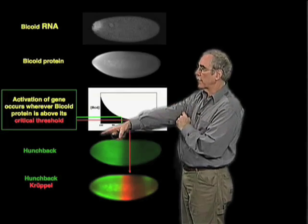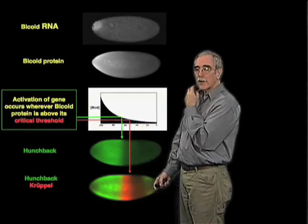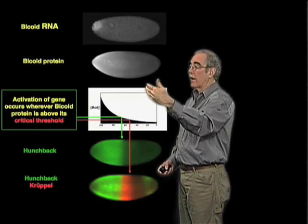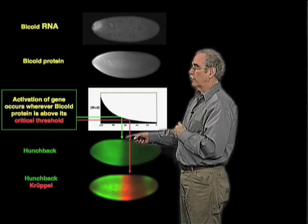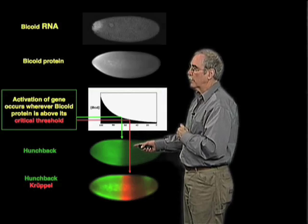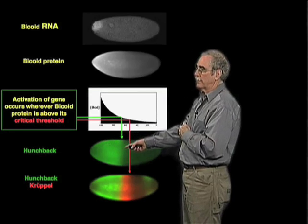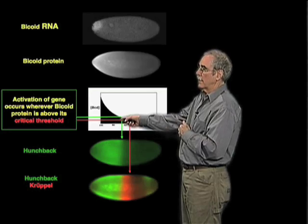So there are certain genes, for example, like the hunchback gene, that are activated by relatively higher concentrations of Bicoid protein and show expression only in the anteriormost 48% of the egg, as you can see here.